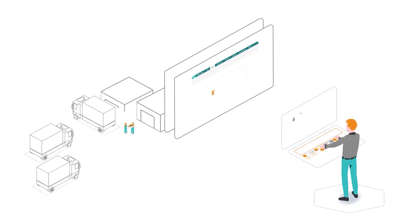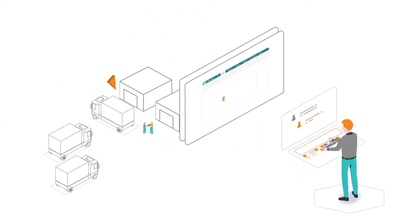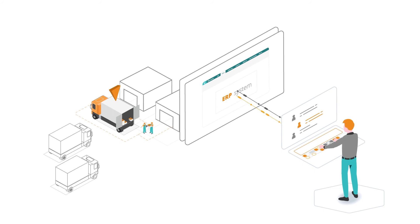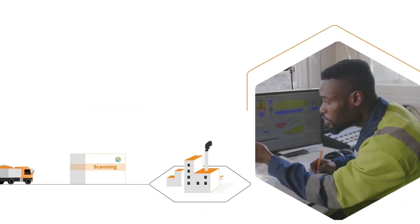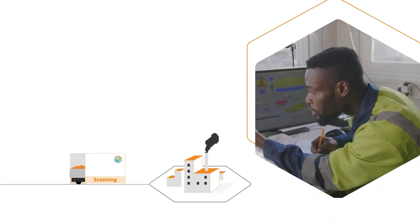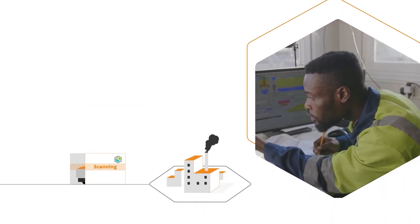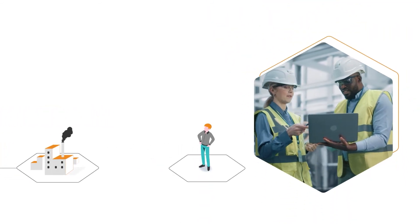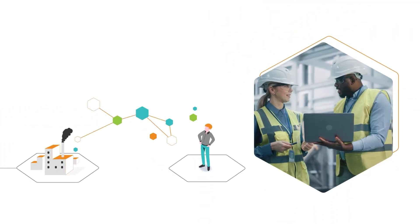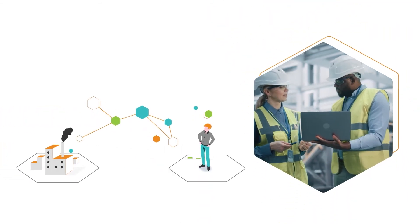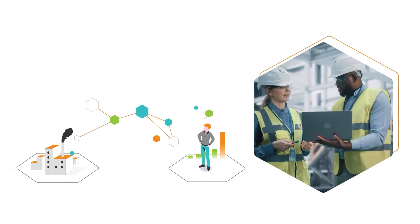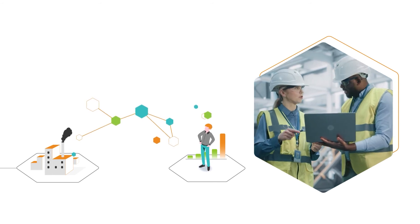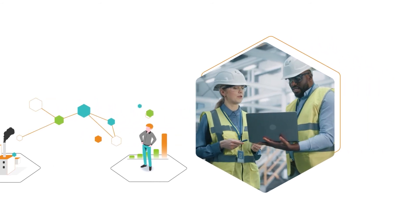Next, Ben selects the supplier and all details are automatically added to the ERP system. The factory then requests materials from the new source via Bizagi. The new application facilitates a new way of working by integrating existing systems and automating steps to boost efficiency.